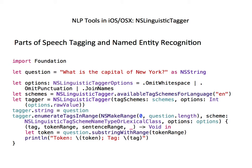Next, we specify the schemes that we're interested in having available when using NSLinguisticTagger. Since we know we're analyzing an English string, we can use the availableTagSchemes for language function on NSLinguisticTagger and pass in the language code for English, EN.